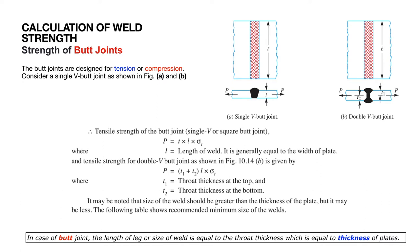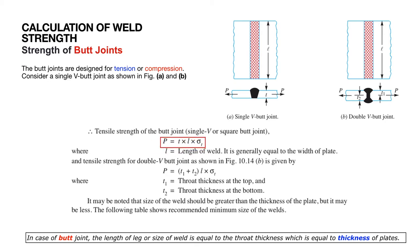To determine how much load is acting and what tensile strength is required, the formula is: P equals the thickness of the plate multiplied by the length multiplied by the tensile strength. By interchanging load and tensile strength, you can determine various values.